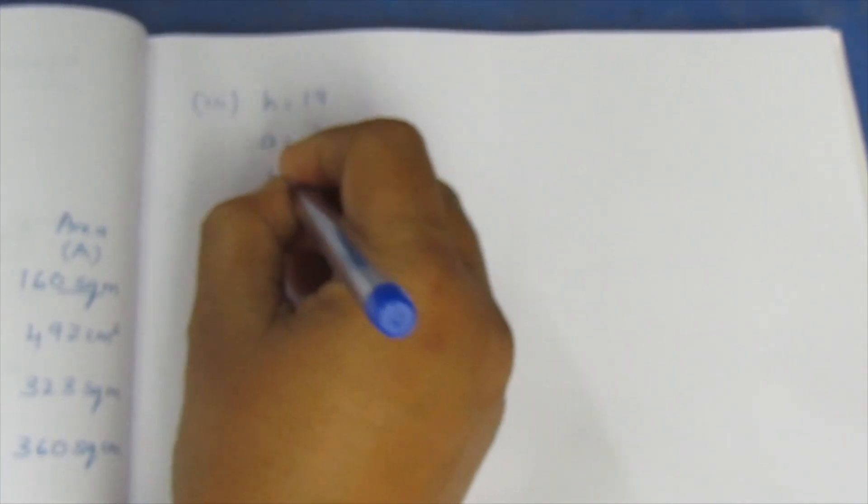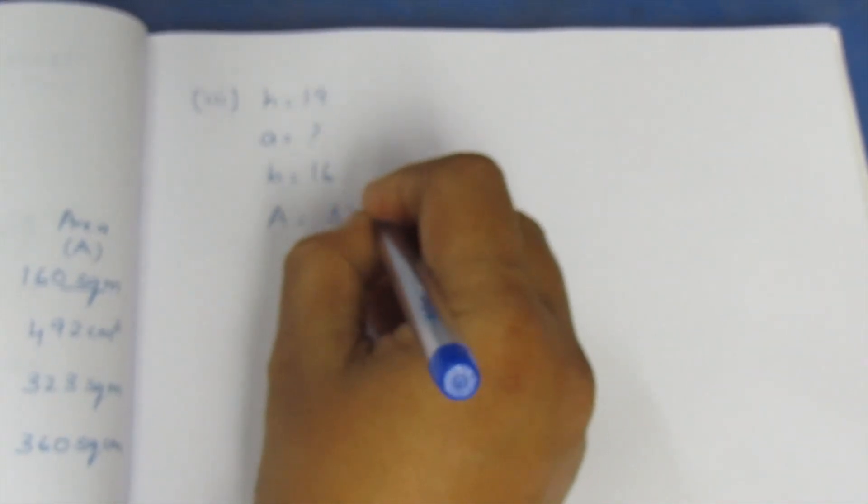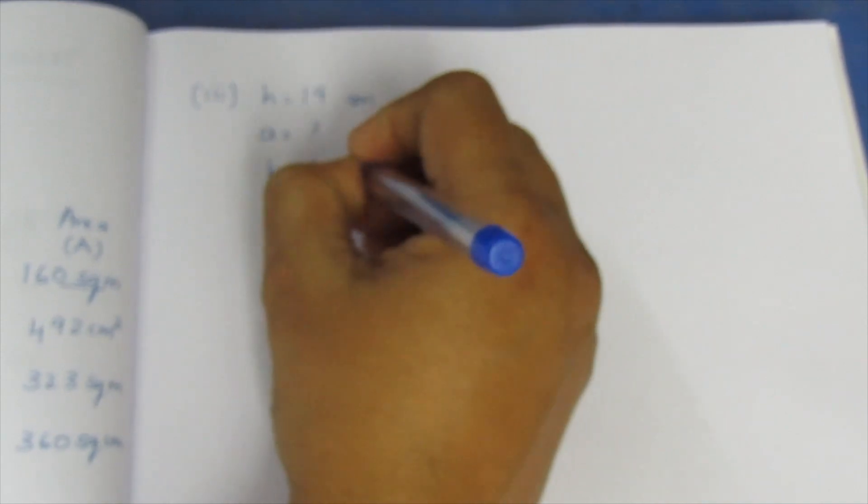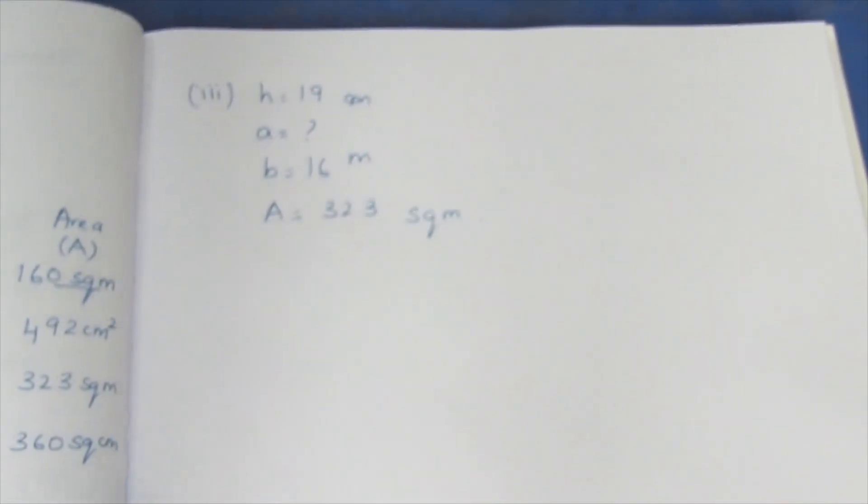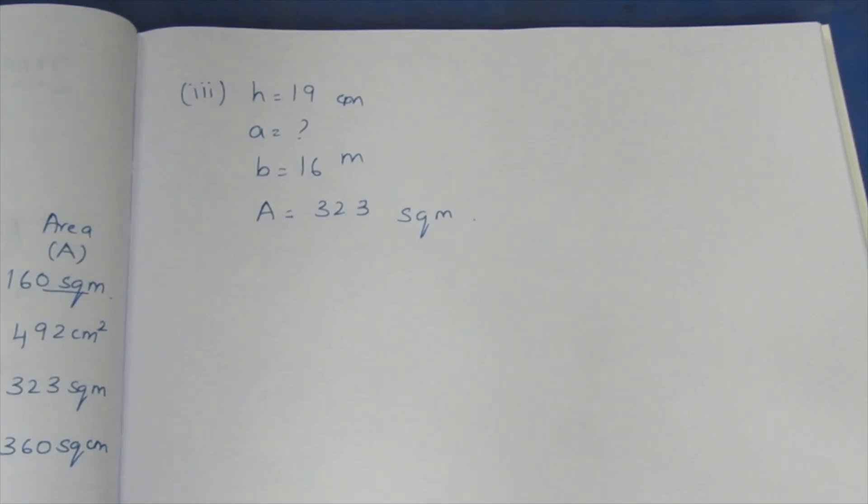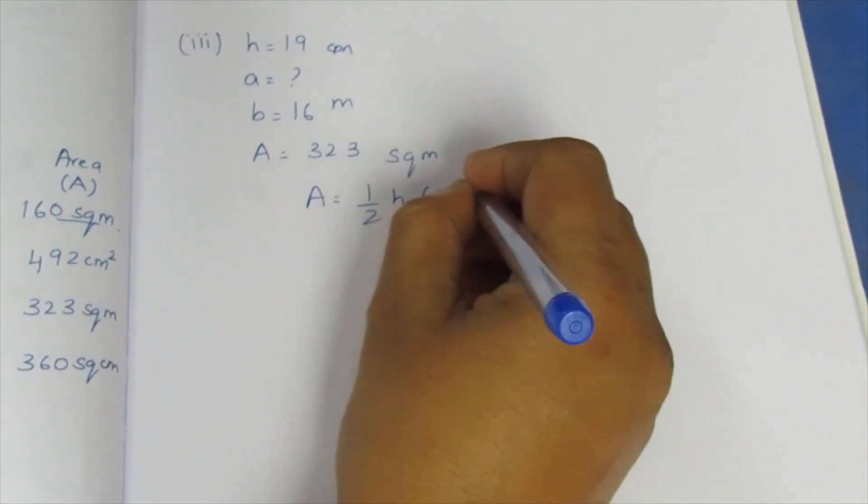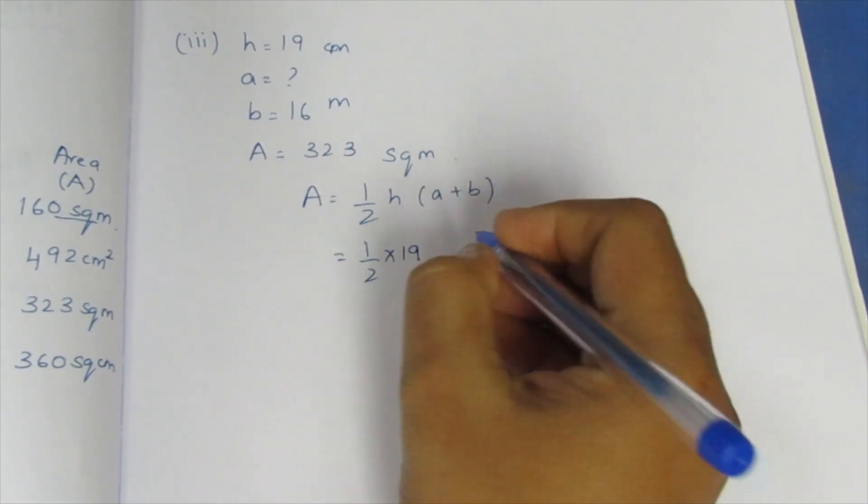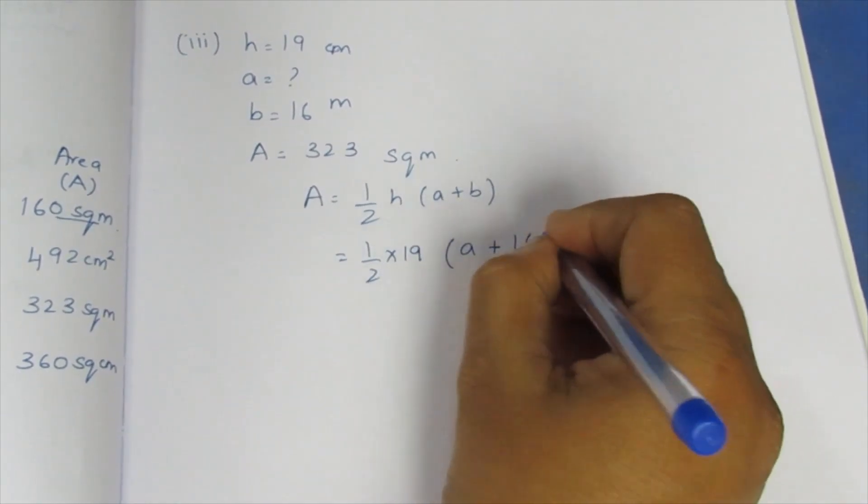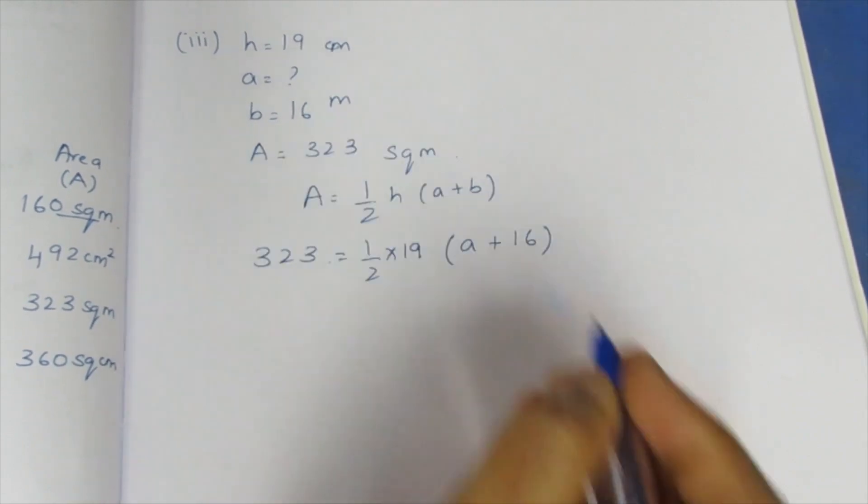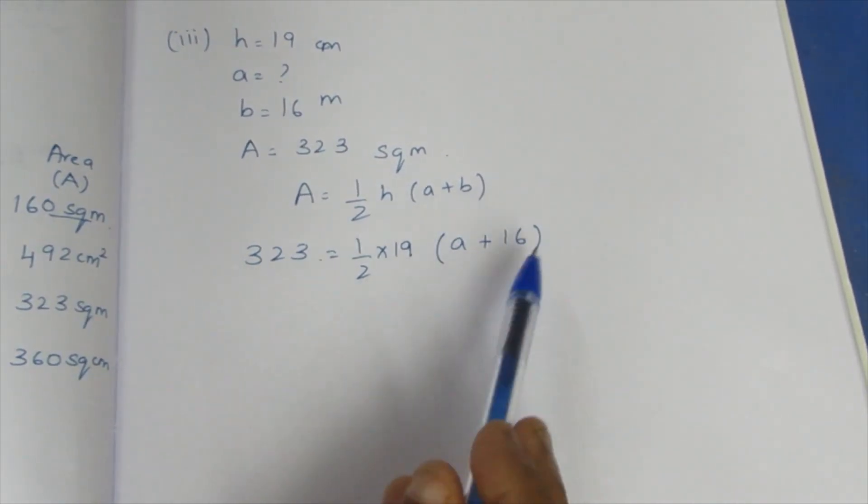Now we can try to do third sum. Look at third sum: height 19, A unknown, B 16, area 323 square meters. As usual, area formula. So area equals one by two H A plus B. One by two times 19 times A plus 16 equals 323. This bracket, solve this.